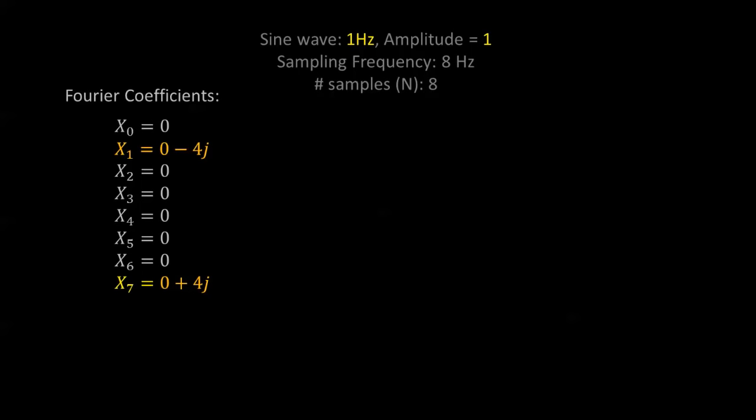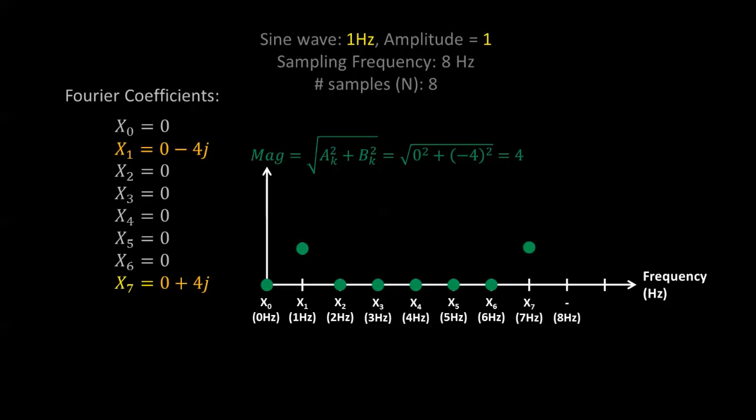Calculating all remaining Fourier coefficients, we find that only the first and seventh frequency bins have nonzero values. Their magnitudes are both equal to 4. Plotting all magnitudes on a spectrum plot, the frequency resolution equals the sampling frequency divided by the number of samples — 8 divided by 8 equals 1 Hz — so each subsequent bin is 1 Hz greater. We see a value at the first bin, which makes sense as it corresponds to 1 Hz, matching our 1 Hz sine wave.